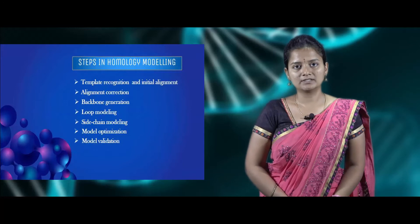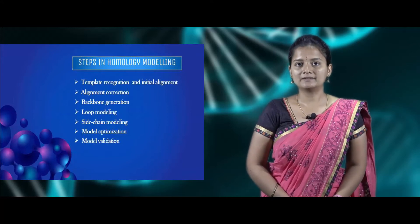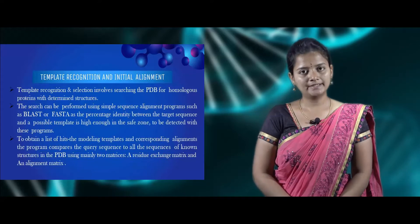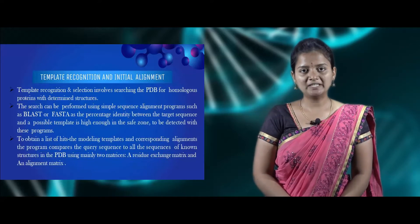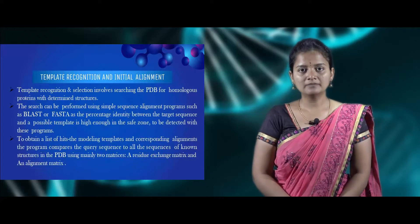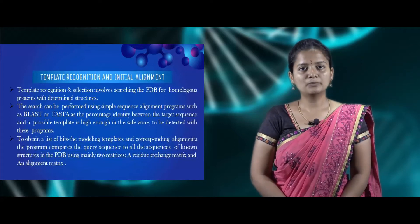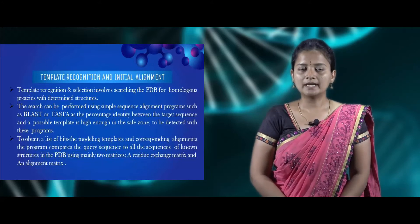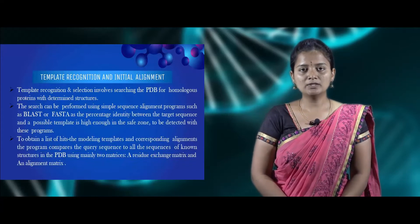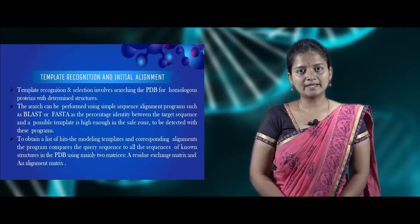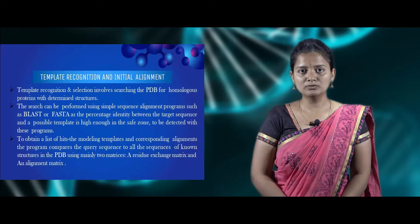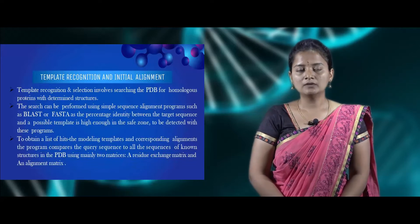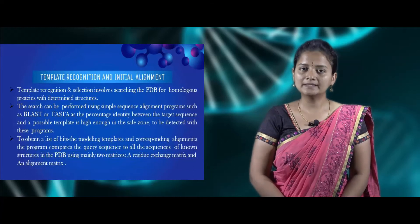The seven steps are: initial alignment and template recognition, alignment correction, backbone generation, side chain modeling, loop modeling, model optimization, and model validation. The first step is template recognition and initial alignment. In this step we search PDB databases for homologous proteins with determined structures, performing sequence alignment using programs like BLAST or FASTA to determine the percentage identity for target and template sequences, and to get sequence hits using scoring matrices like residue exchange matrix and alignment matrix.